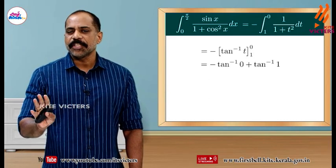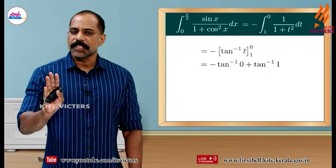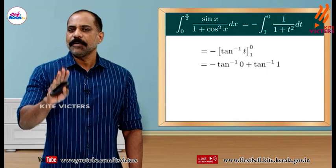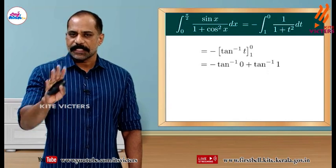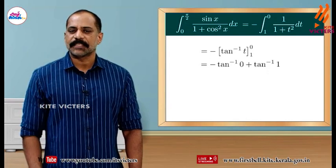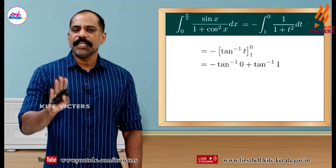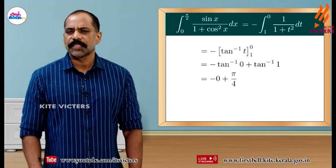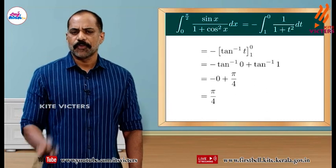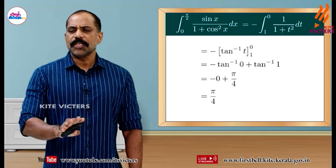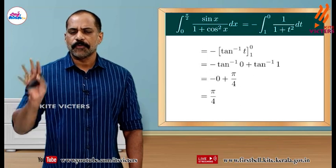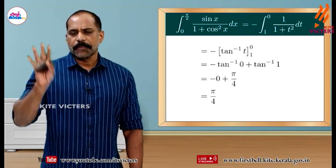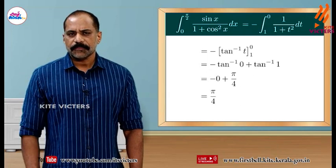Substituting: tan inverse 1 minus tan inverse 0 equals pi by 4 minus 0 equals pi by 4. So the result is pi by 4.